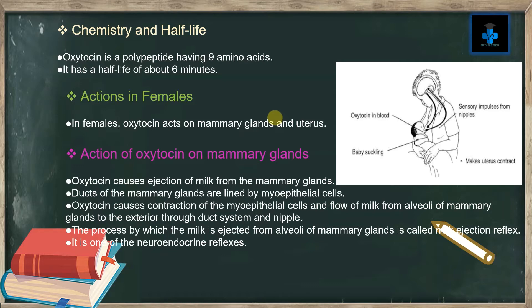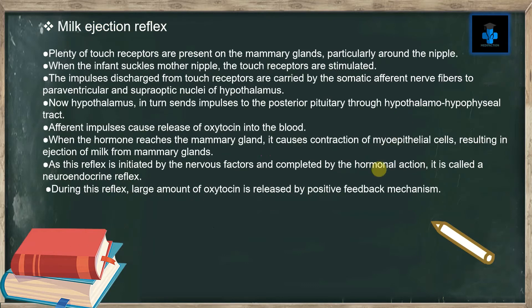In females, oxytocin acts on the mammary gland and uterus. Oxytocin causes ejection of milk from the mammary gland. The ducts of the mammary glands are lined by myoepithelial cells. Oxytocin causes contraction of the myoepithelial cells and flow of milk from the alveoli of the mammary glands to the exterior through the duct system and nipple. The process by which milk is ejected from the alveoli of the mammary gland is called the milk ejection reflex, and it is one of the neuroendocrine reflexes.